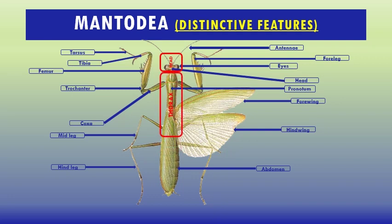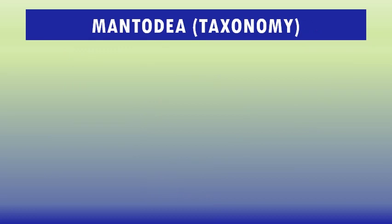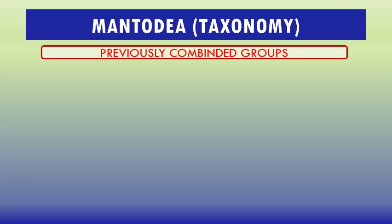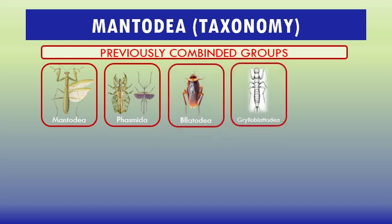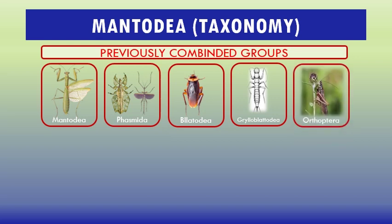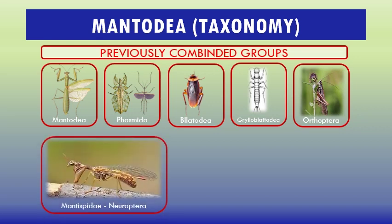Regarding Mantodia taxonomy, these insects were previously combined with other groups under the order Orthoptera, including Mantodia, Phasmida, Blattodea, and Grylloblattodea. Due to superficially similar raptorial forelegs, mantid flies in the order Neuroptera may be confused with mantises, though they are unrelated — their similarity is an example of convergent evolution. Mantid flies do not have tegmina, the leathery forewings like mantises.